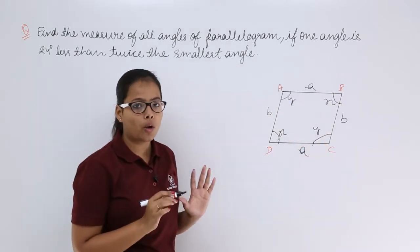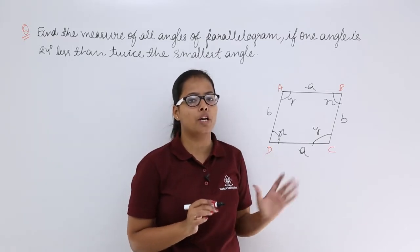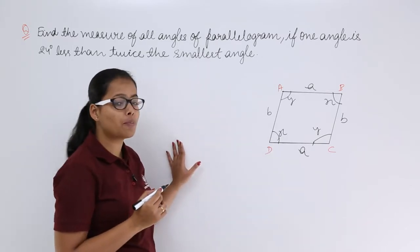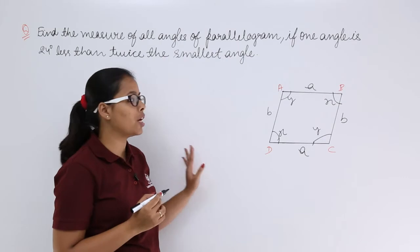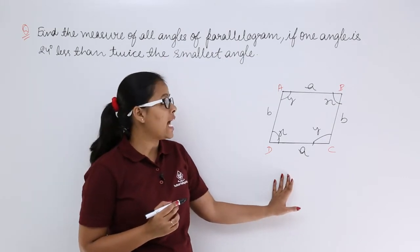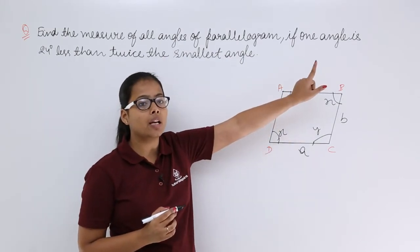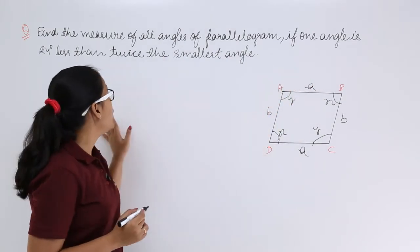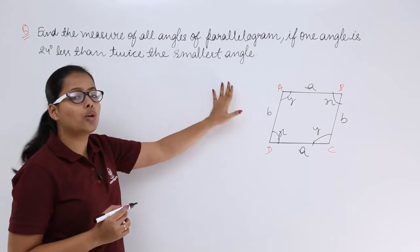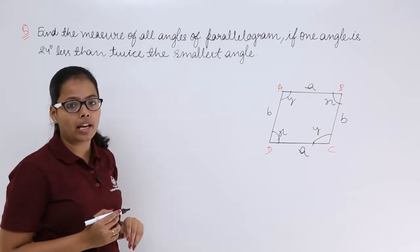There should be no doubt about the properties of this parallelogram. Now let's see what has been given regarding this parallelogram. It has been told that one angle is 24 degrees less than twice the smallest angle.